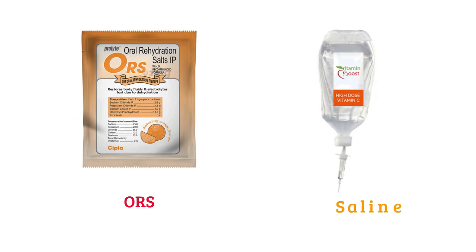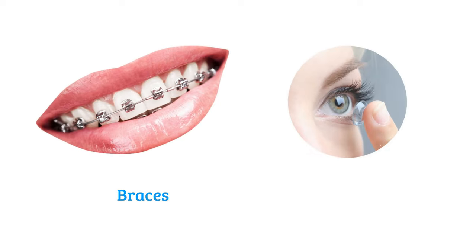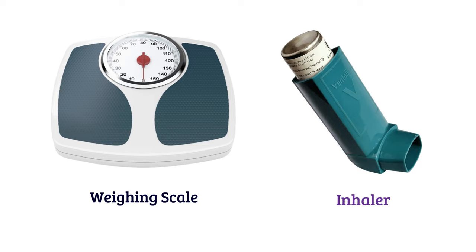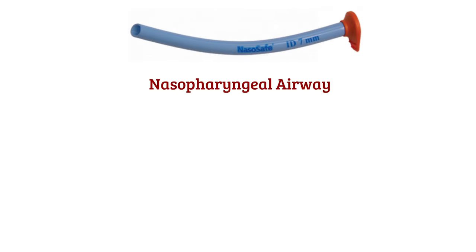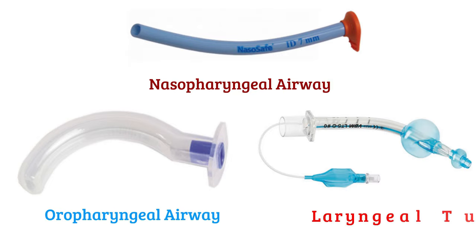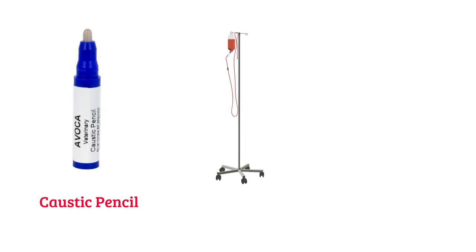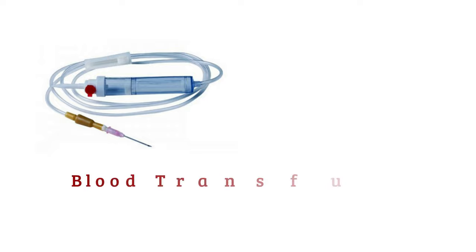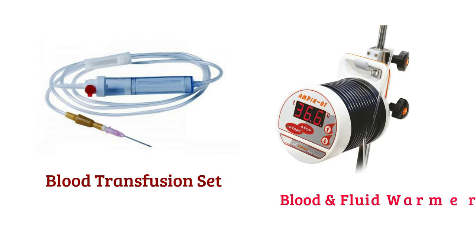Saline, braces, contact lens, weighing scale, inhaler, nasopharyngeal airway, oropharyngeal airway. Laryngeal tube, caustic pencil, IV drip stand, cane or walking stick, blood transfusion set, blood and fluid warmer.